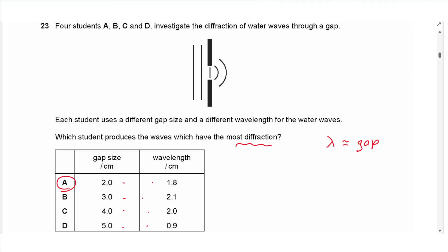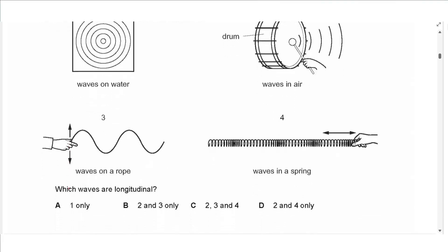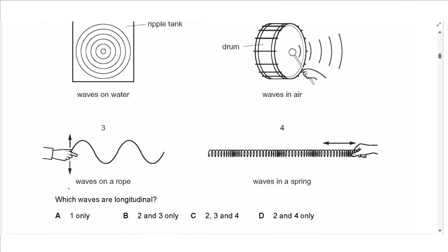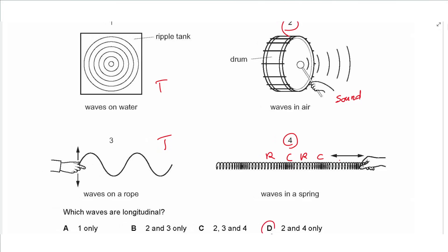Question 24: Diagrams show waves on water (transverse), waves in air from a drum (longitudinal — compressions and rarefactions), waves on a rope (transverse), and waves in a spring (longitudinal). The longitudinal waves are the sound wave (2) and the spring wave (4). Answer is D.